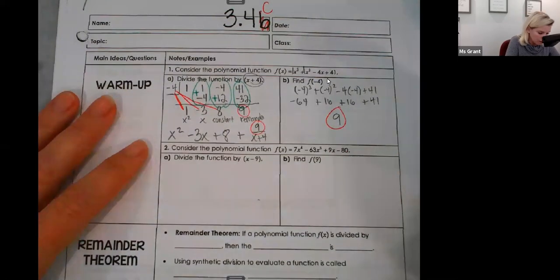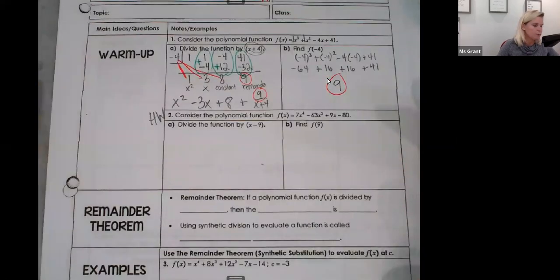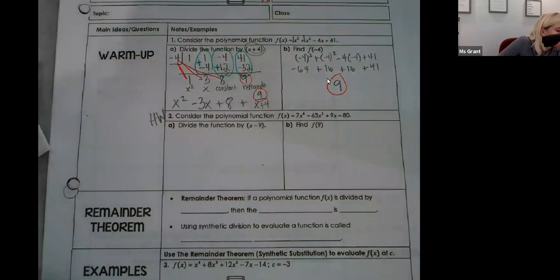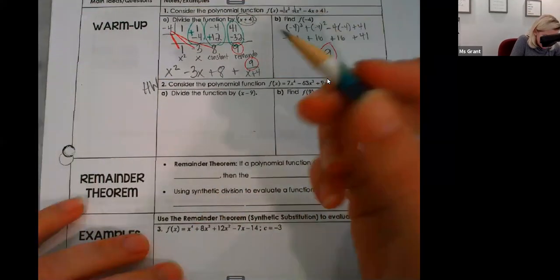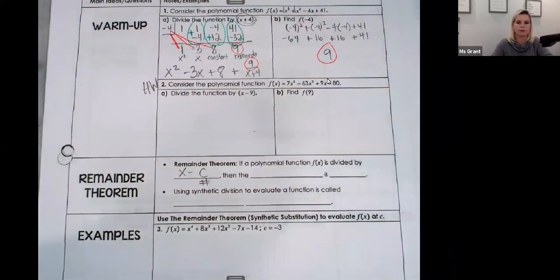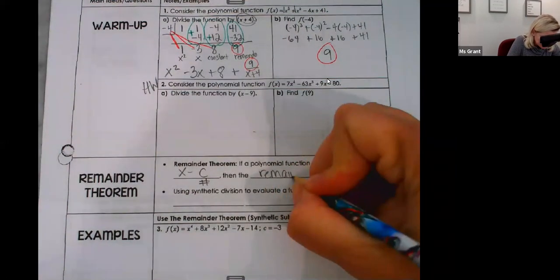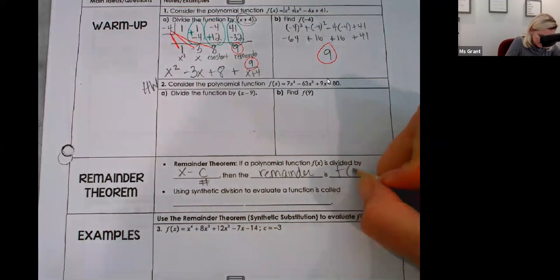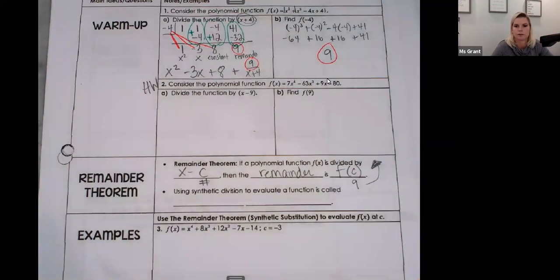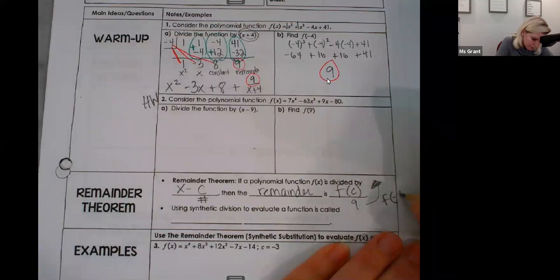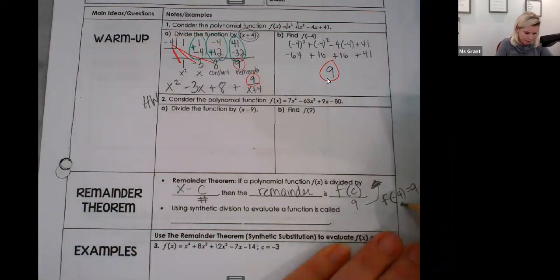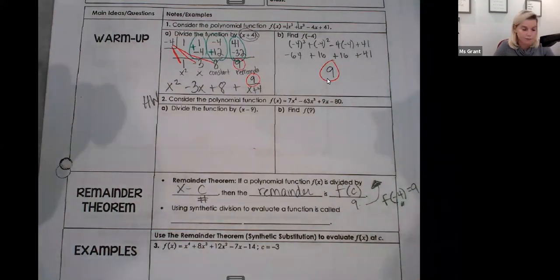Now you're going to do number two on your own — that's your homework, evens. Here's the Remainder Theorem: if a polynomial function f(x) is divided by x minus c, where c is just a number, then the remainder is f(c). We just did it: f of negative four equaled nine. Using synthetic division to evaluate a function is called synthetic substitution.